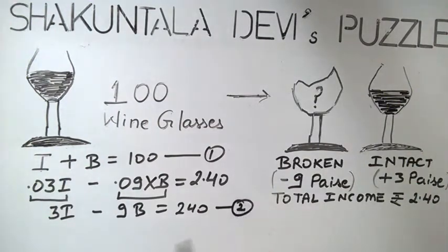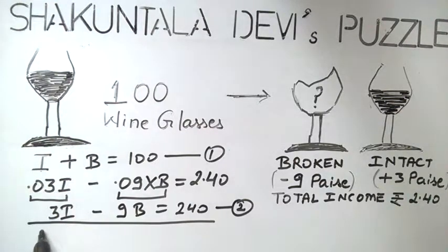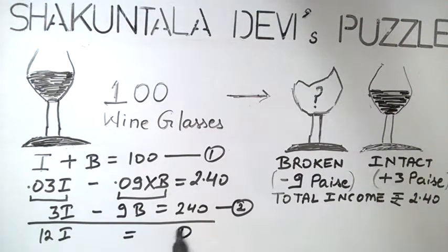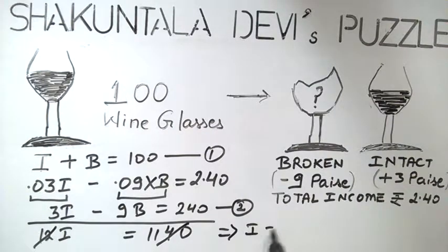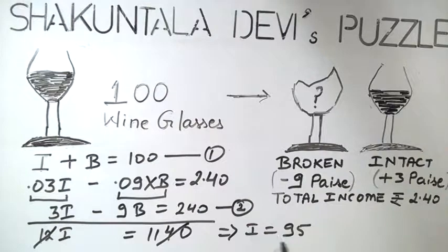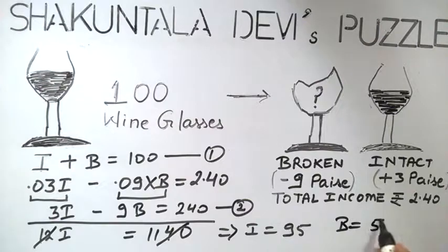This gives the second equation. By solving the first and second equations, we get 12I equals 1140. Dividing, we get I equals 95. So the servant has delivered 95 intact glasses. Putting this value in the first equation, we get B equals 5 — that is, the servant has broken 5 glasses.